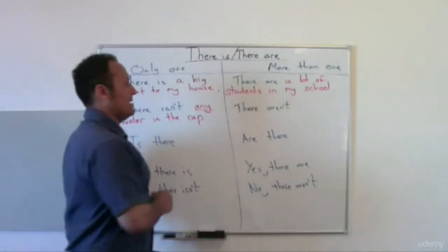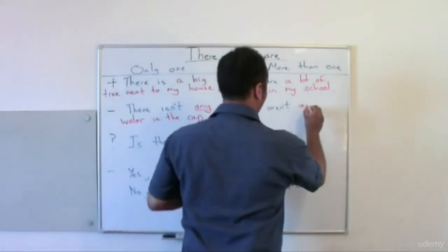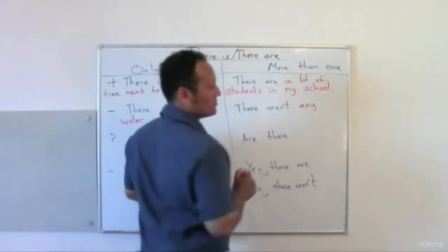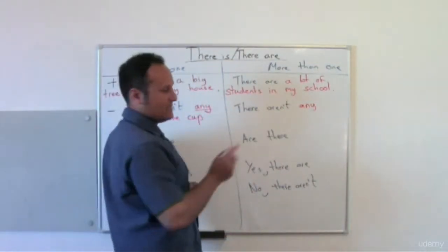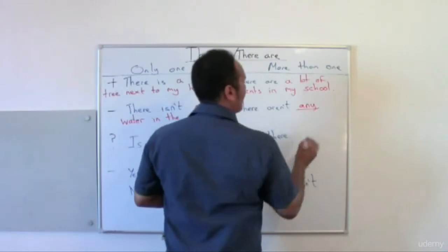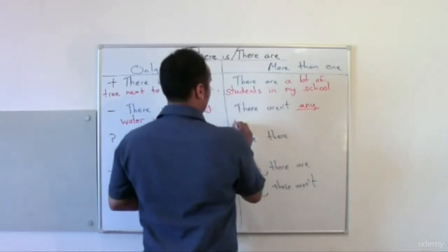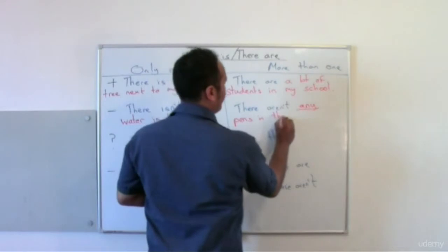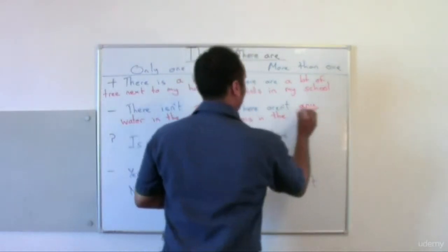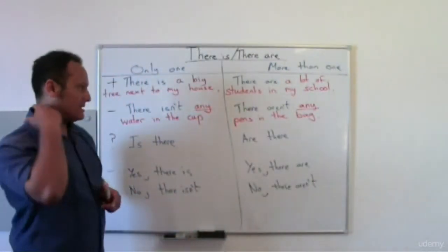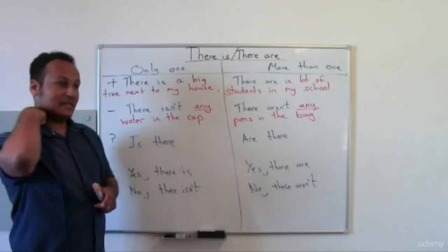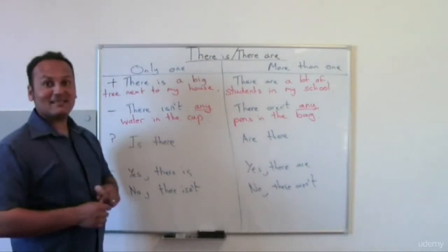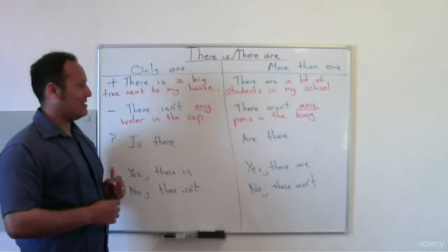Now for the plural negative: 'There aren't any pens in the bag.' We can use 'any' with 'pens' as well — both negative forms take 'any'.